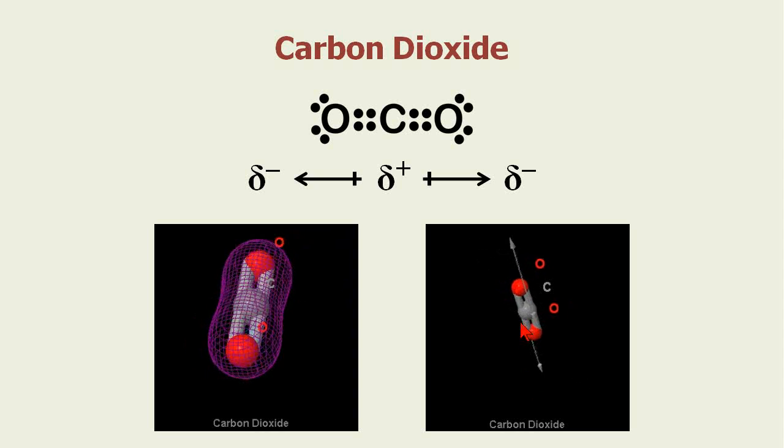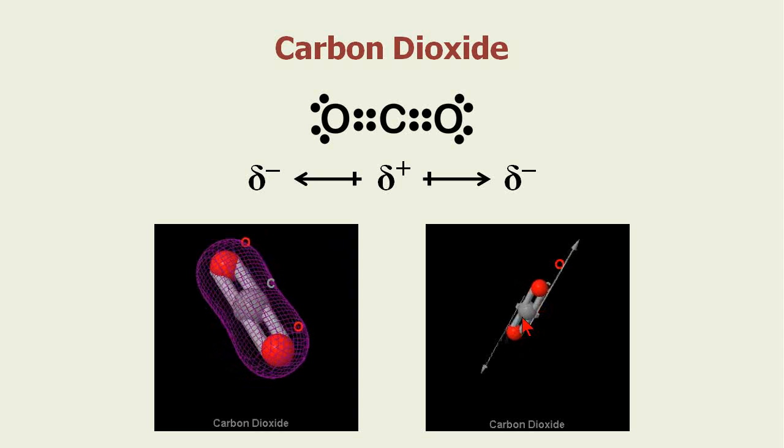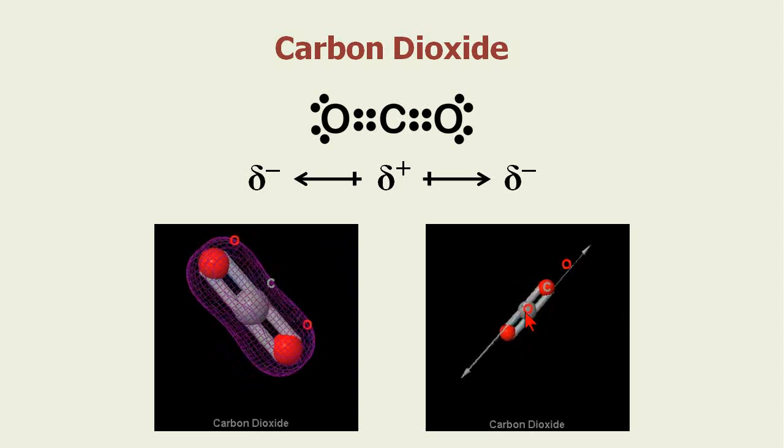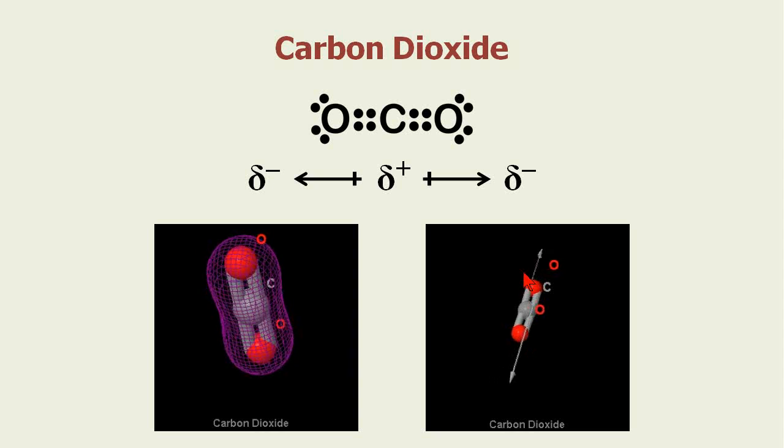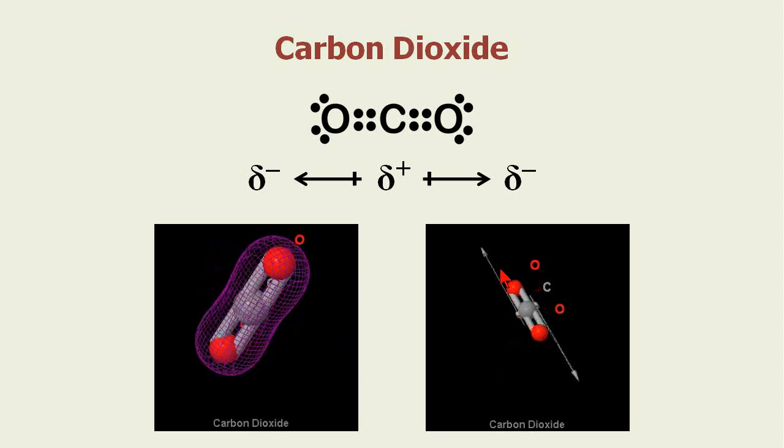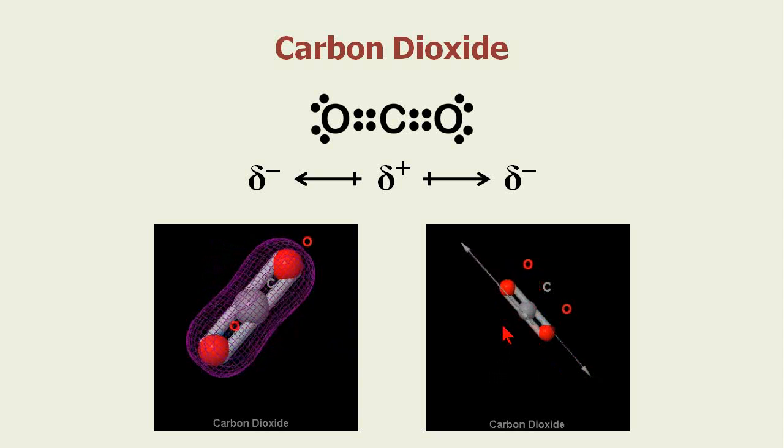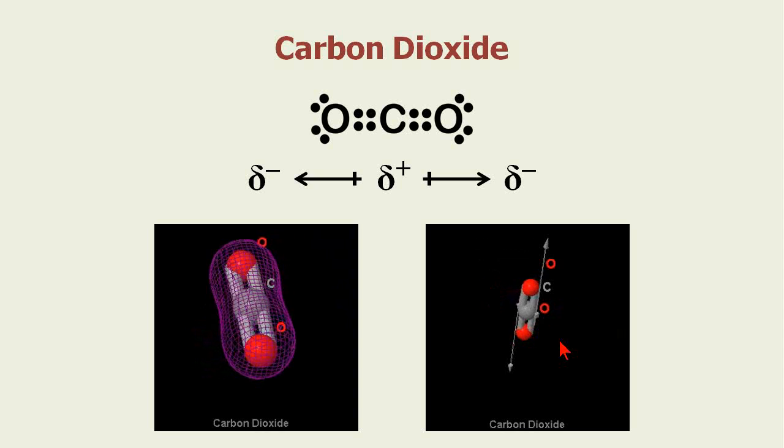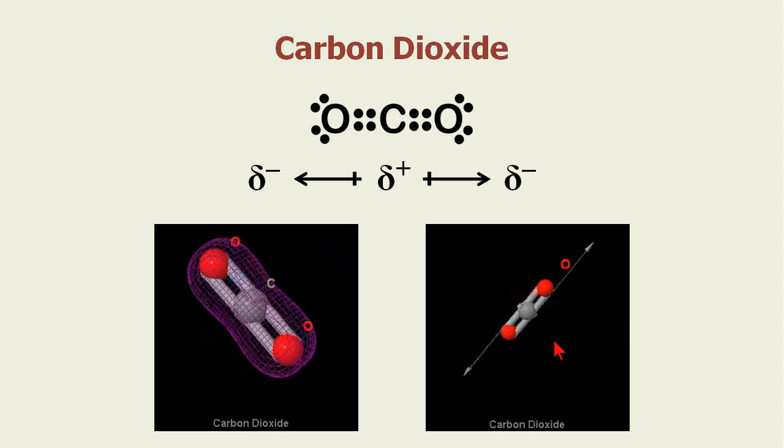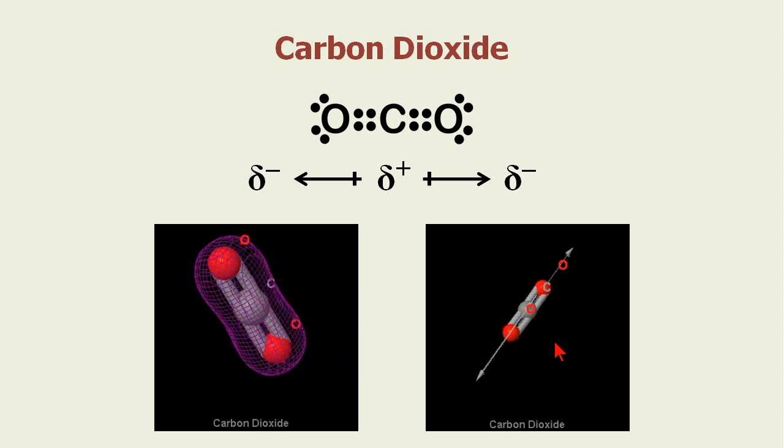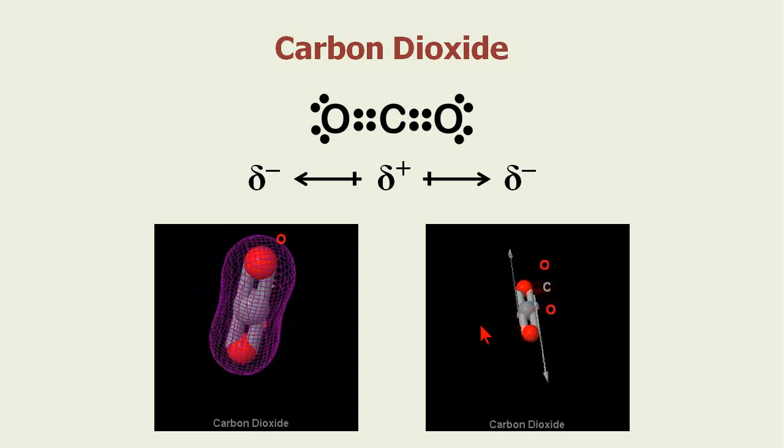Both the bonds and a molecule may be considered polar. In this case, since the two vectors, which are the dipoles, are equal and opposite, the molecule itself is not considered polar. But the bonds are considered polar.